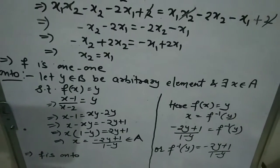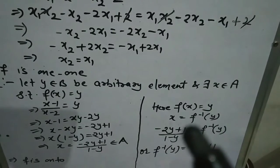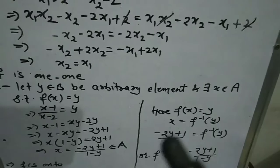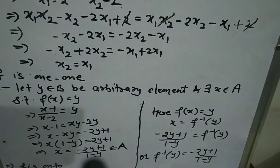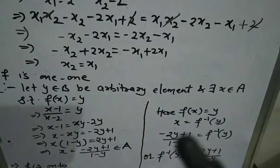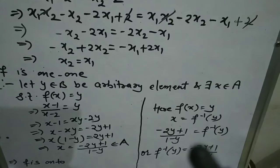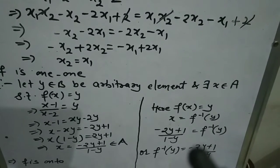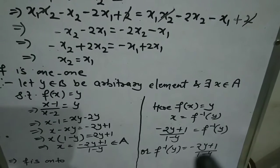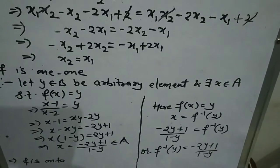Now since the inverse exists, let's find it. Since f(x) = y and x = f⁻¹(y), we place the value of x we found: x = (-2y+1)/(1-y), so f⁻¹(y) = (-2y+1)/(1-y). Writing it clearly: f⁻¹(y) = (-2y+1)/(1-y). If you want to change the variable, you can — it makes no difference. So f⁻¹(x) = (-2x+1)/(1-x).